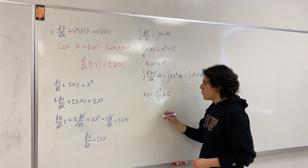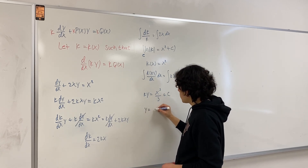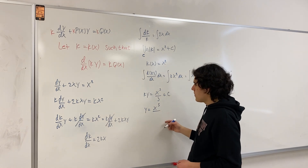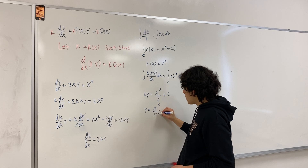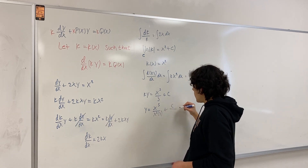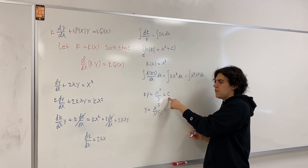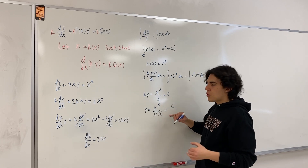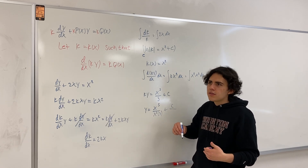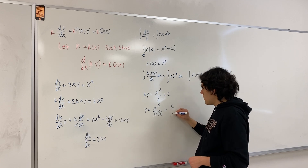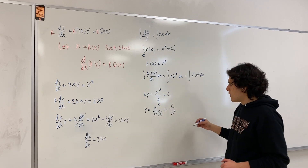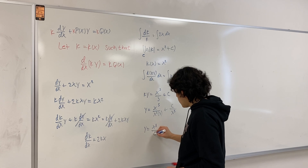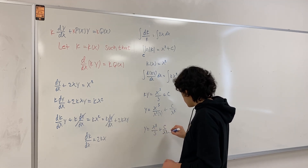This integral gives k times y on the left, and on the right we have x to the fifth power divided by five, plus a constant of integration c. To solve for y, we divide both sides by k, which is x squared. So y equals x to the fifth power divided by five divided by x squared, plus c divided by x squared. That gives y equals x to the third power divided by five, plus c divided by x squared. Be careful: when you divide by k, k also divides c, so it is c over x squared — a function of x, not just a constant. That is a common way to make an error on these problems.